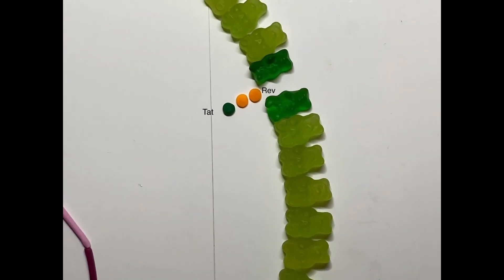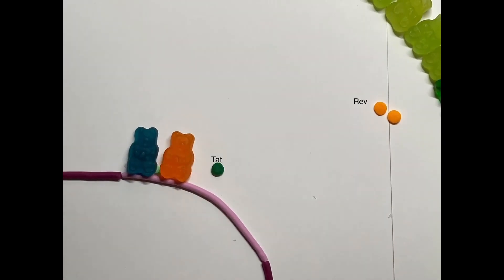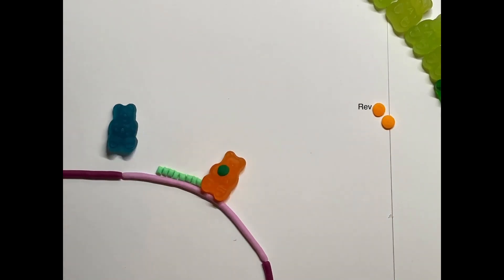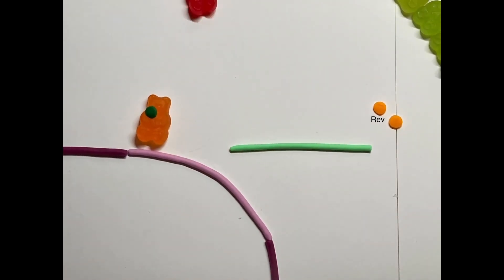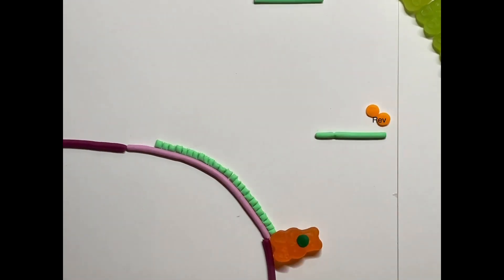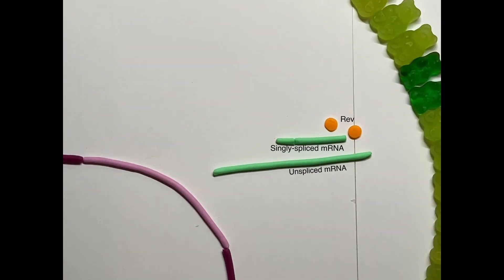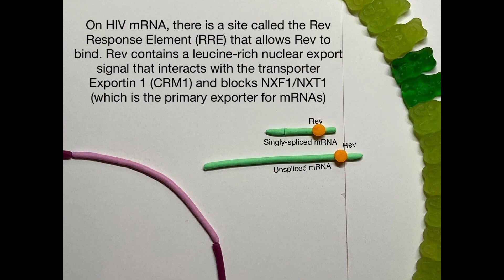TAT and REV do not stay in the cytosol but instead return to the nucleus where they function. TAT greatly increases transcription of the HIV provirus by helping to hyperphosphorylate RNA polymerase II and recruiting histone acetyltransferases to provide an optimal environment for transcription; without TAT, initial rounds of transcription are extremely limited. REV allows incompletely processed mRNA strands to exit the nucleus by binding to the REV response element in unspliced HIV RNAs and associating with exportin-1 (CRM1), enabling export of unspliced and singly spliced HIV mRNA through the nuclear pore complex without the assistance of NXF1-NXT1.